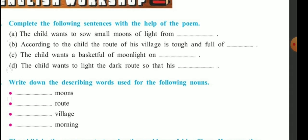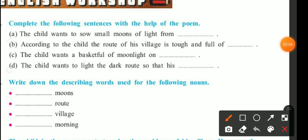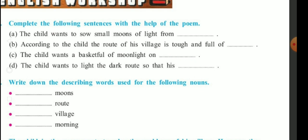C. The child wants a basketful of moonlight on loan. D. The child wants to light the dark root so that his father returns early.